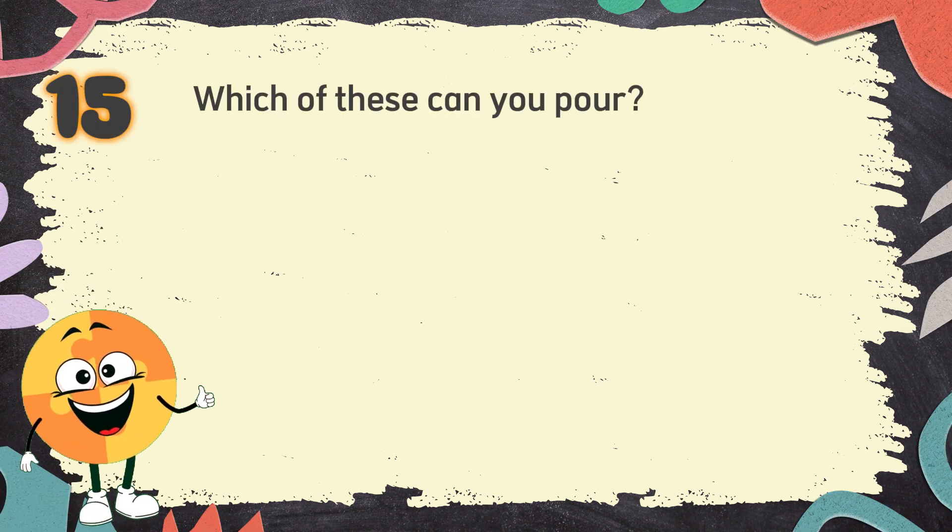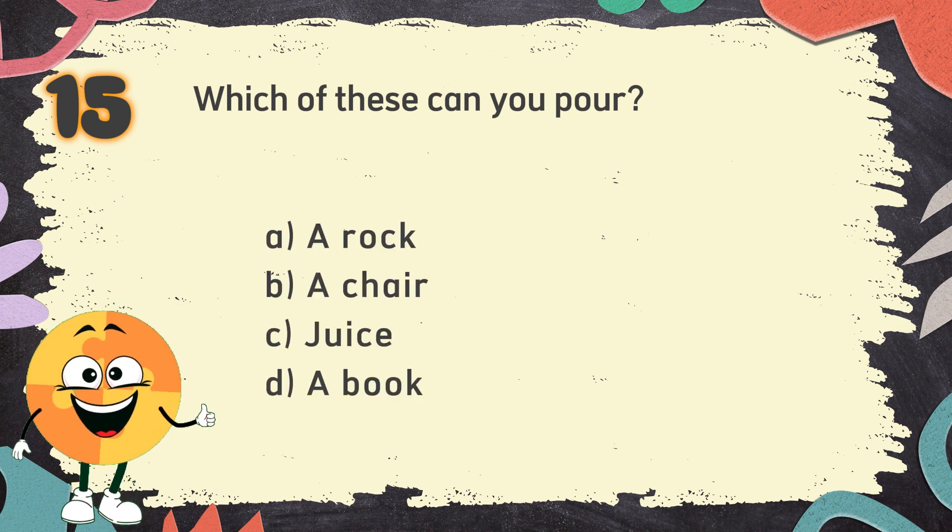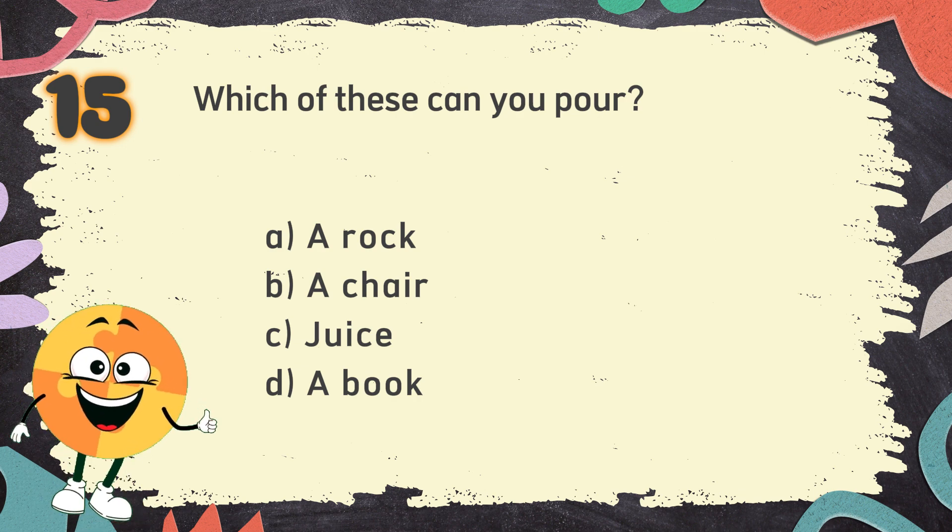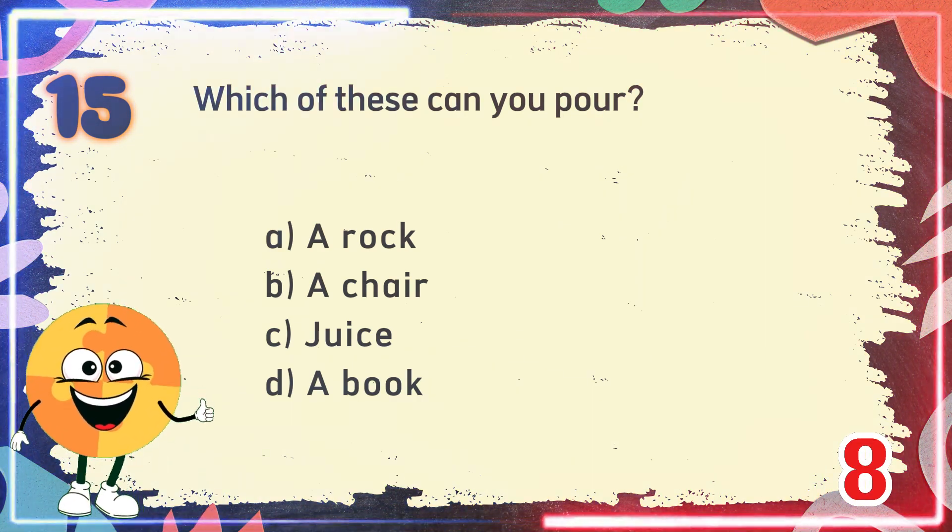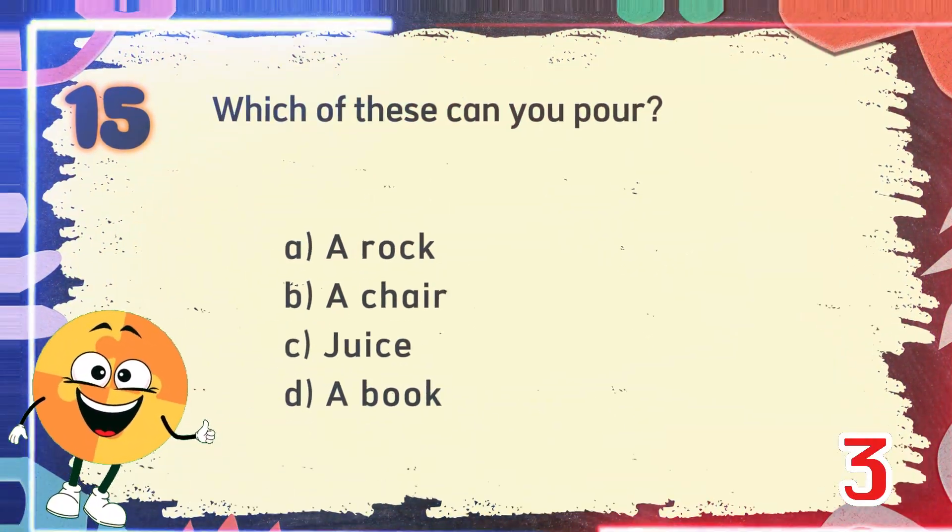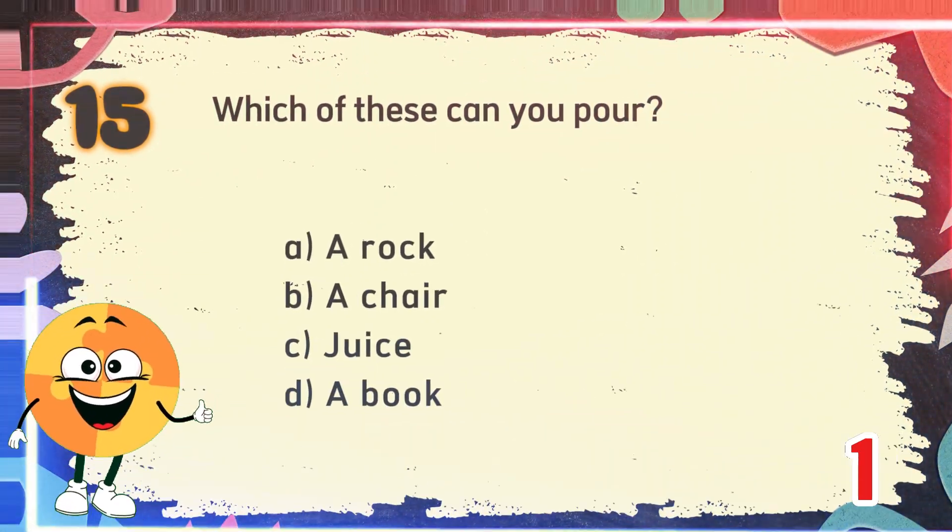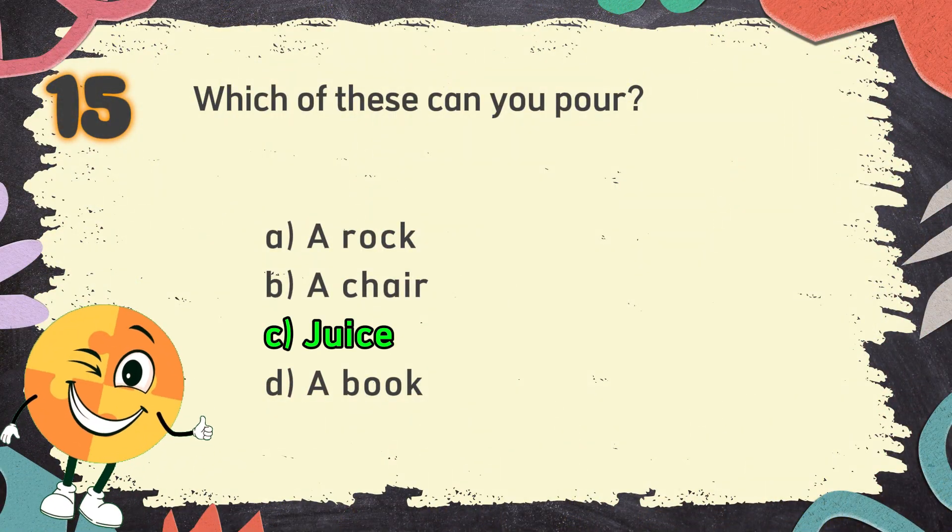Number 15. Which of these can you pour? The choices are A. A rock, B. A chair, C. Juice, D. A book. The correct answer is C. Juice.